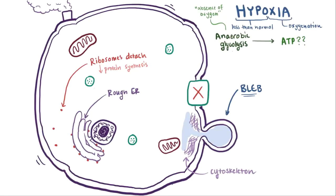which isn't nearly as efficient and only produces a net of about 2 ATP molecules per glucose, whereas oxidative phosphorylation makes about 30 to 36.